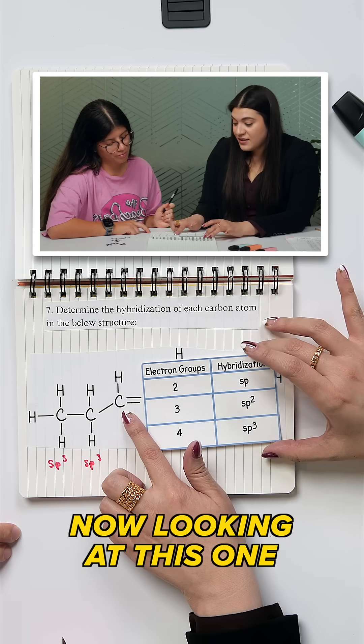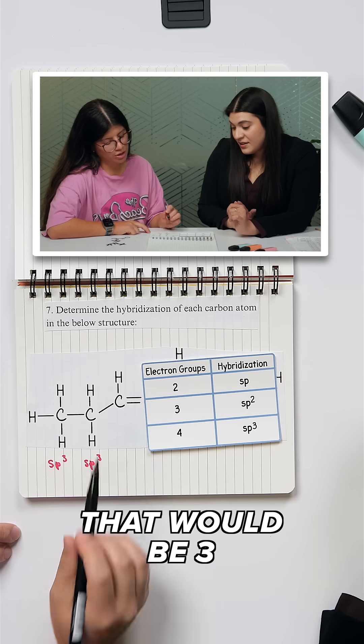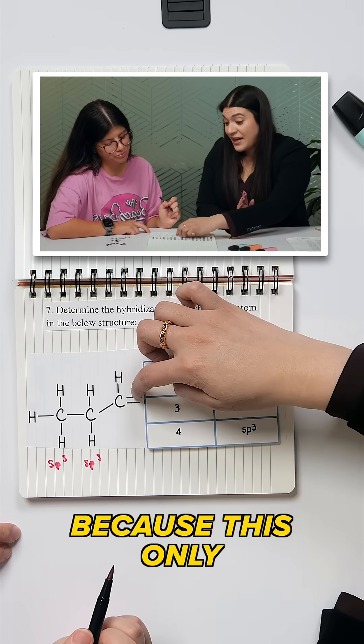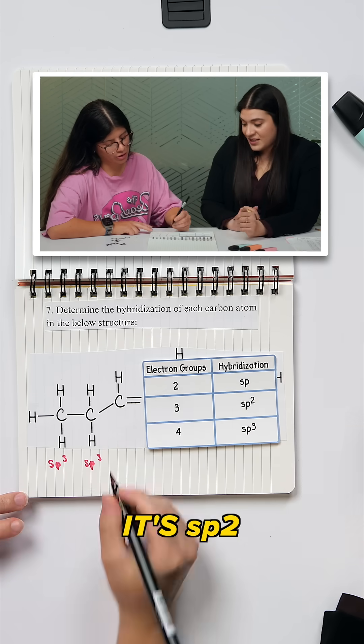And now looking at this one, how many electron groups do we have? That would be three. Three, correct, because this only counts as one. So then we know it's SP2.